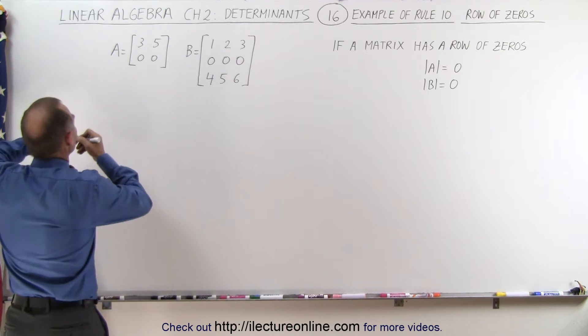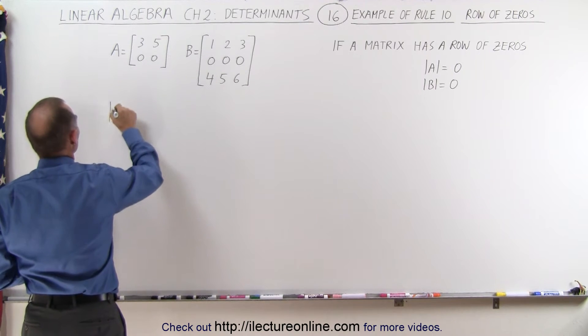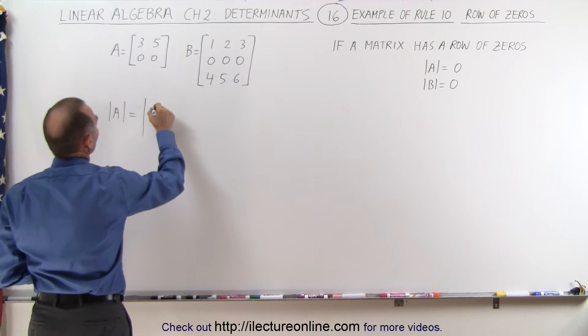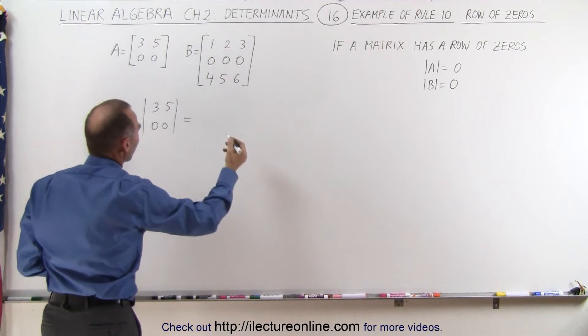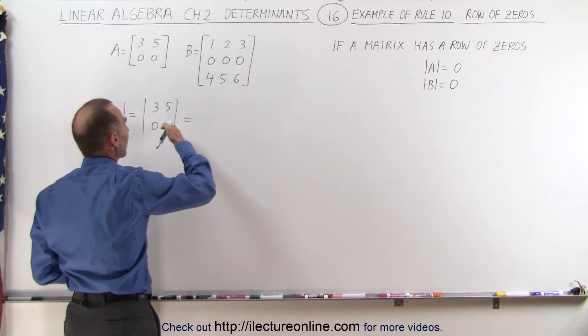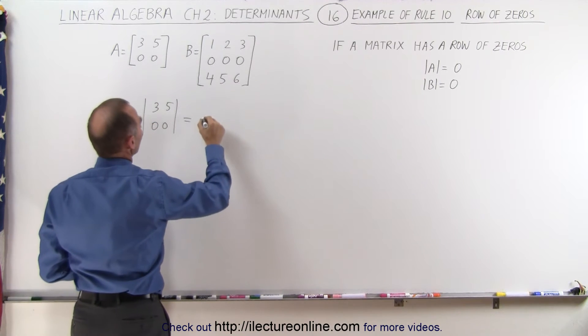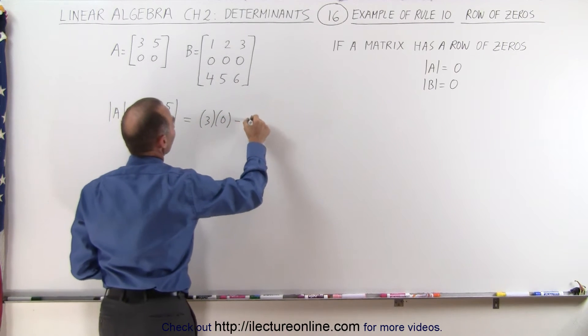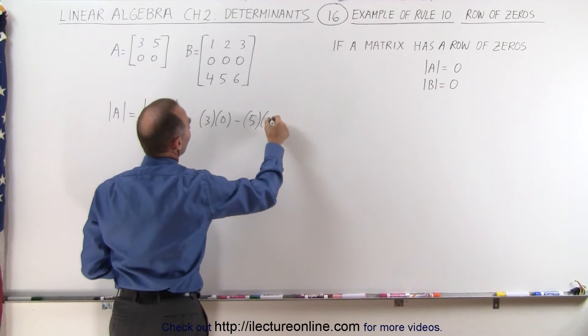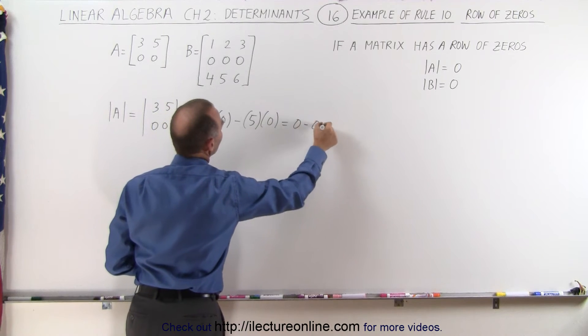Starting with the easy one with A, let's take the determinant of the matrix A which is equal to 3, 5, 0, 0. And again with the rule you multiply those two diagonals minus those two diagonals, so we end up with 3 times 0 minus 5 times 0. This is 0 minus 0 equals 0.